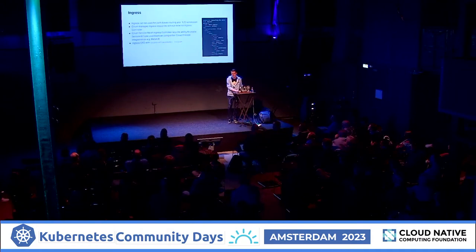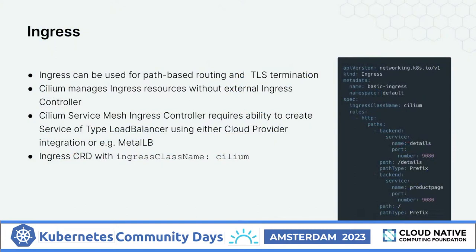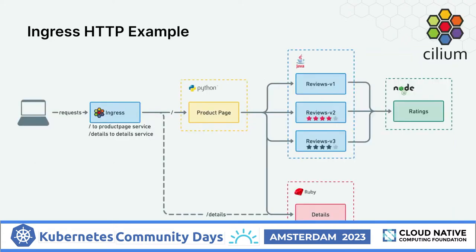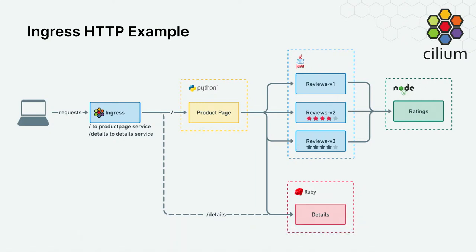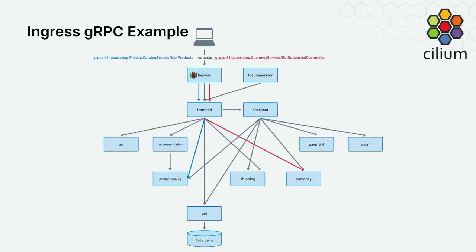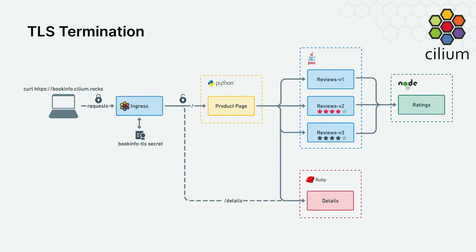Let's look at the features. For ingress, it follows the Kubernetes ingress spec — you don't need an external ingress controller. You specify `ingressClassName: cilium` and enable Cilium on the Helm chart. In this example with the Book Info application, we forward the default URL to the product page and the details URL to a specific service. We can also do ingress for gRPC — forwarding specific gRPC calls to specific services — and TLS termination using a secret you've created to do TLS decryption at the ingress, then forward to services.